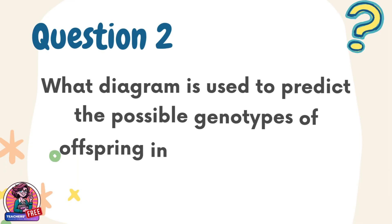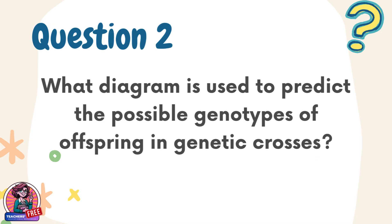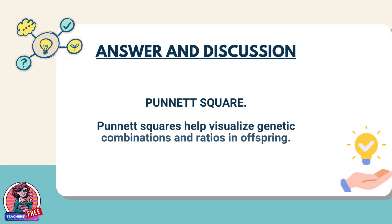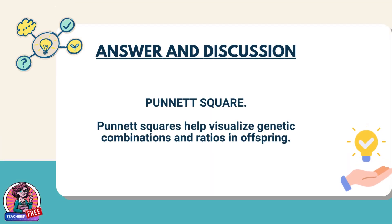Question 2. What diagram is used to predict the possible genotypes of offspring in genetic crosses? Answer: Punnett Square. Punnett squares help visualize genetic combinations and ratios in offspring.